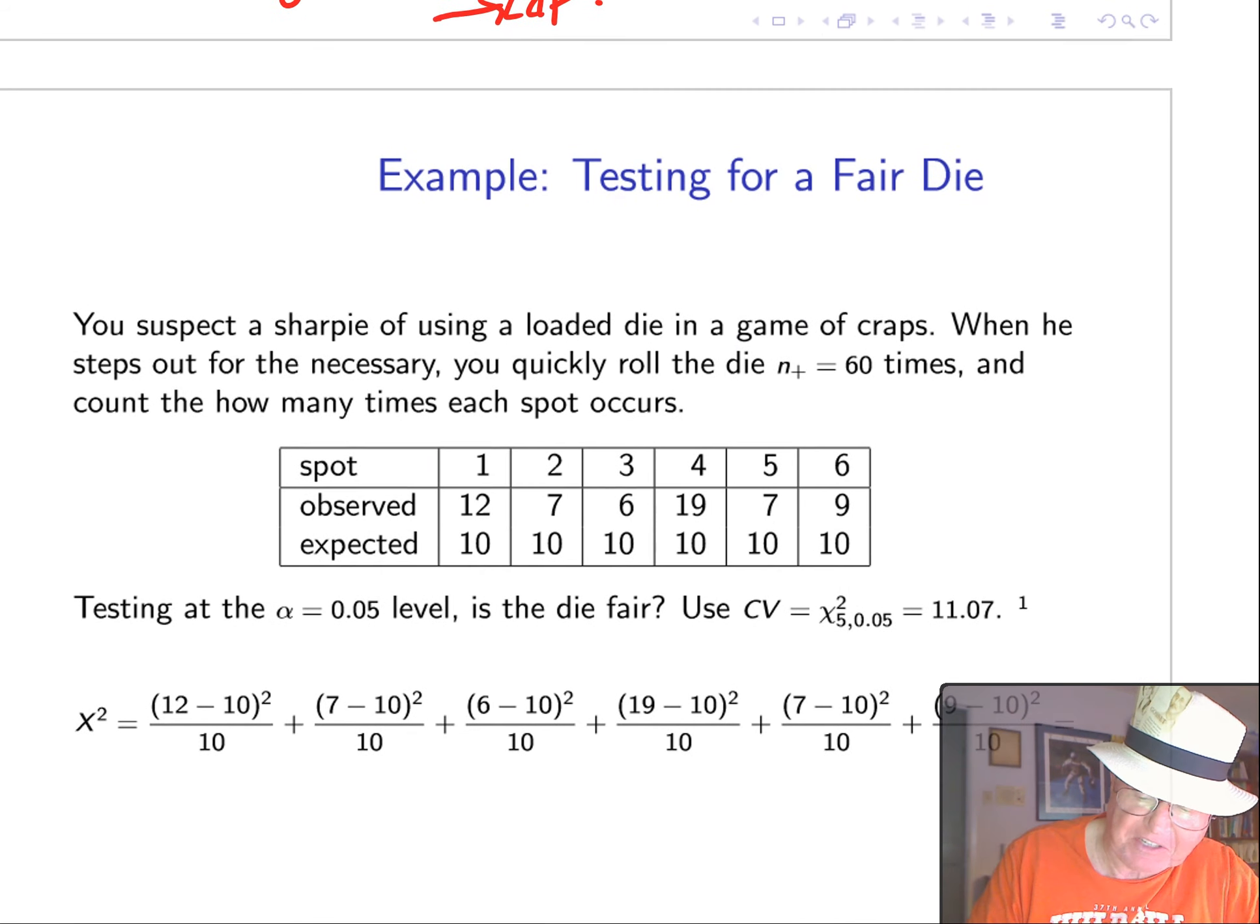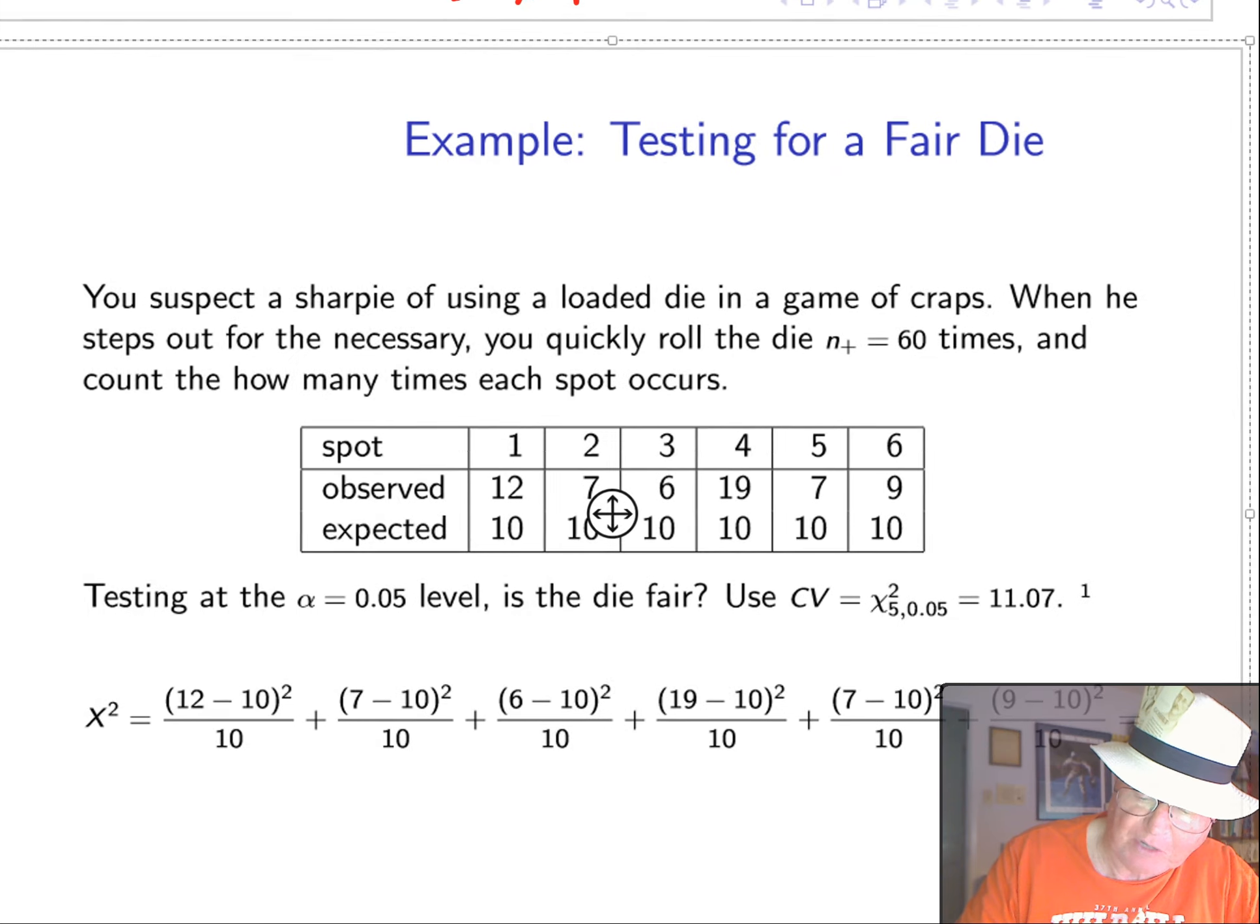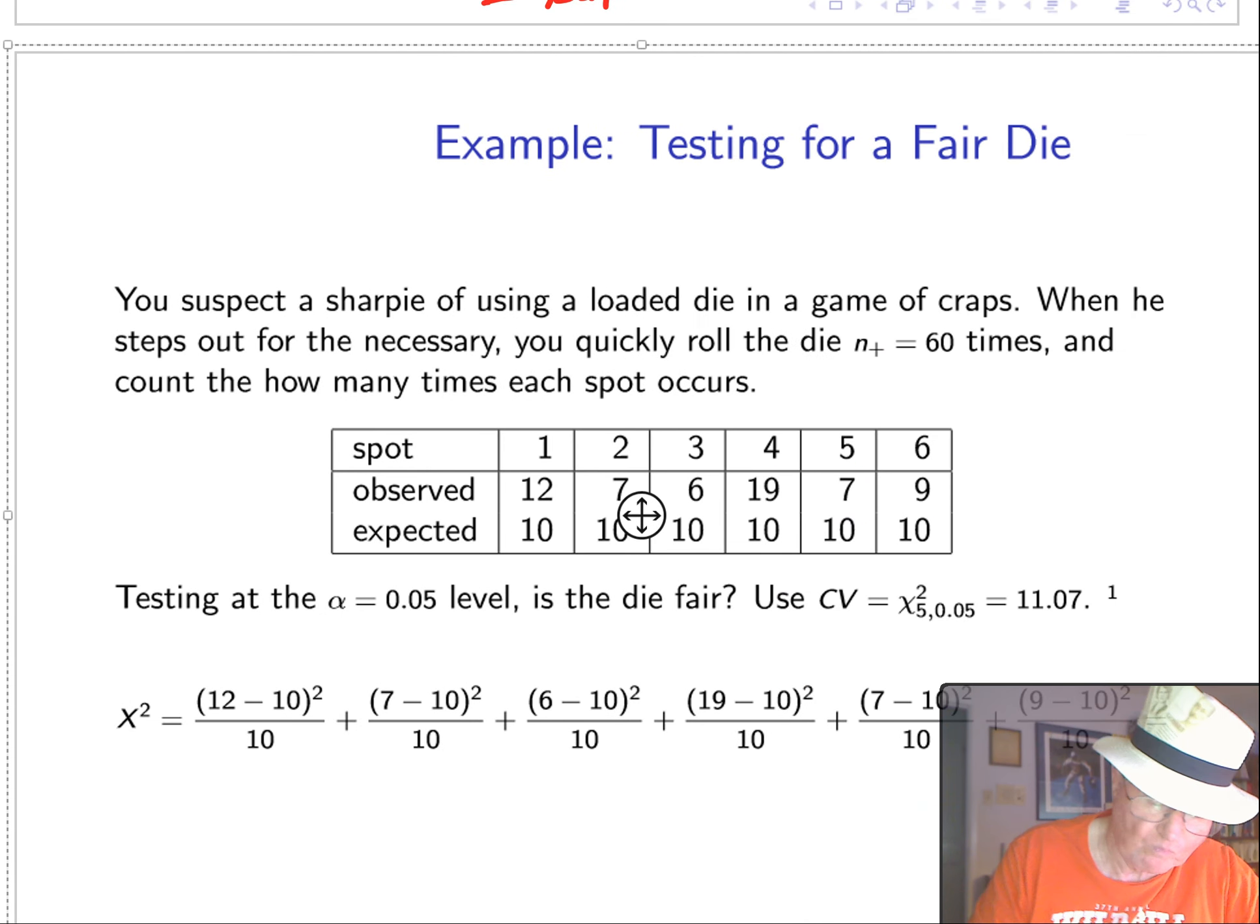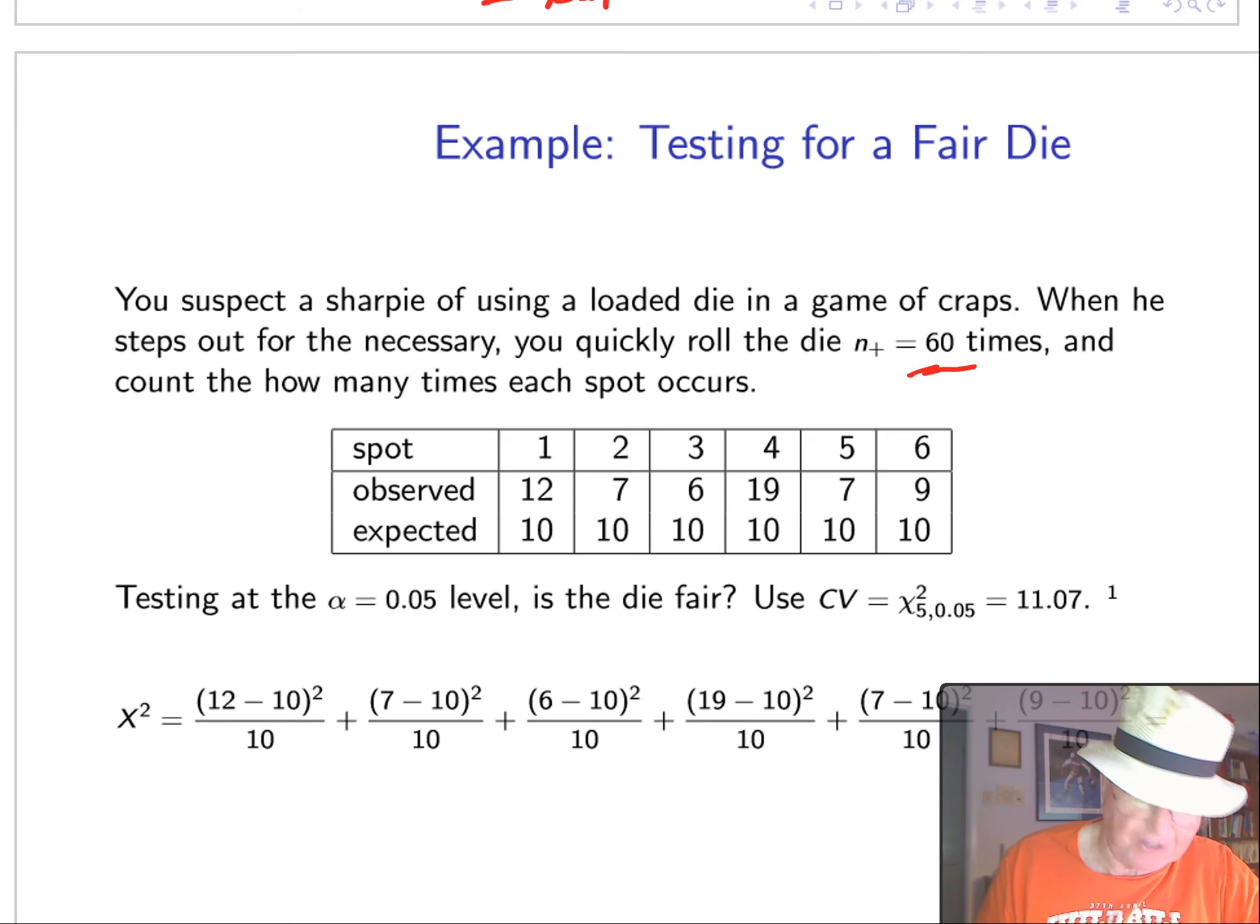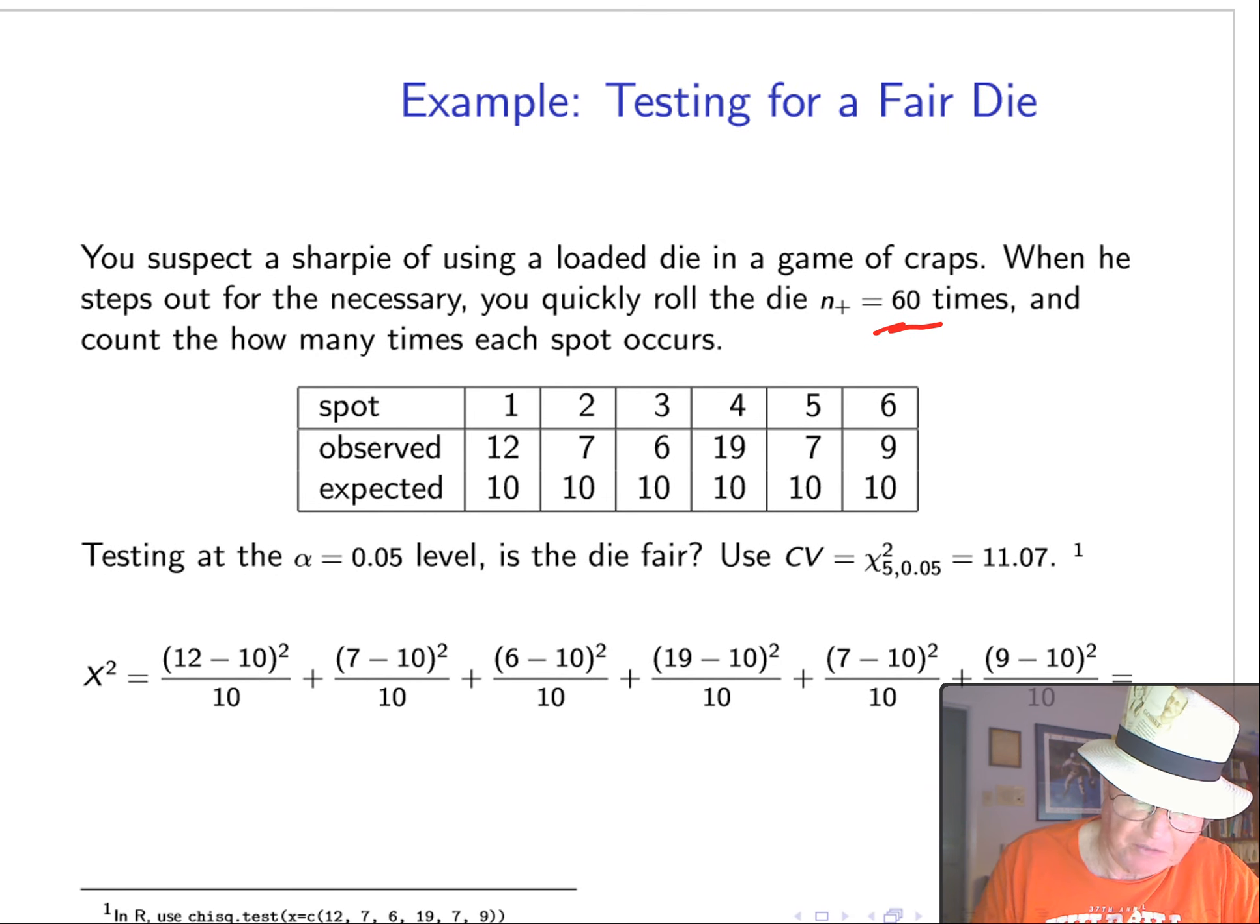Let's look at an example of how this test might work. So, we'll start by doing something really simple. We'll try to test a fair die. So, I suspect someone is using a loaded die in a game of craps. When he's out of the room, I quickly roll the die 60 times and count how many times each spot occurs. And so, here we go. I've got spots 1 through 6. I expect 10, basically 60 divided by 6, for each of the spots. But I get these values: 12, 7, 6, 19, 7, and 9. And I notice I'm light on 3s and heavy on 4s.